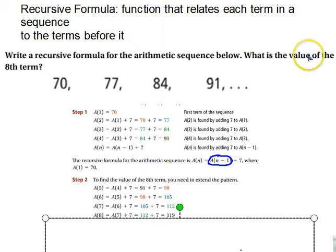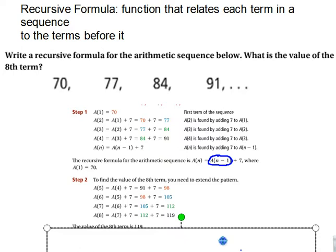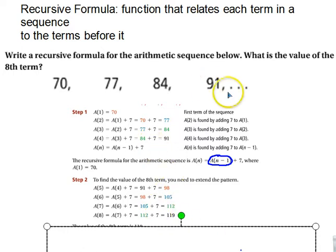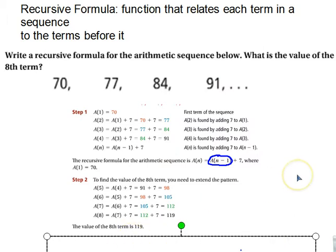So then it says what is the value of the eighth term. So really all we have to do is continue the process. We had 91, so we get 98, 105, 112, 119. The value of the eighth term is 119. It's not really a helpful formula, but it does lead us to the explicit formula. So the recursive formula, you're going to notice something here, that this value is the common difference. So that's helpful. If we know the recursive formula, we can figure out everything else based on that. It's just we need to be told what is the first term.